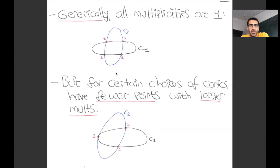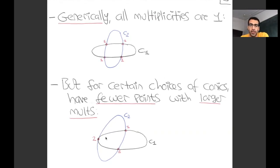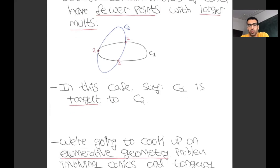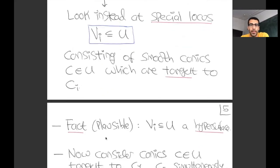If I want to make C1 tangent to C2, one way to think about it is that I'm forcing two of the four intersection points to come together. You have this space of four points, and then I force two of them to come together, and then I get a tangent conic—roughly speaking.